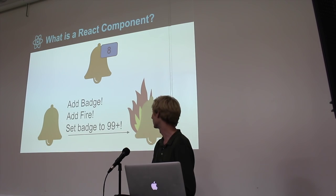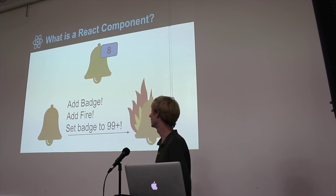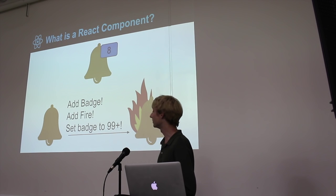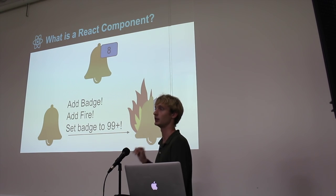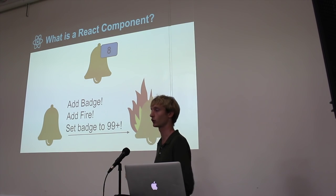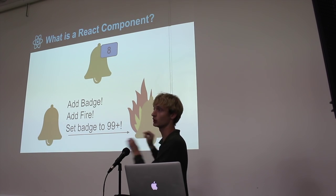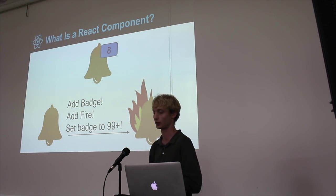Similarly, when transitioning to the fire state, you'd say 'add badge,' 'add fire,' 'set badge value to 99 plus.' And as we add states and need to transition between them, we actually need to do effectively n-squared work — n-squared pieces of code — because we have to handle any transition from any state to any other state.